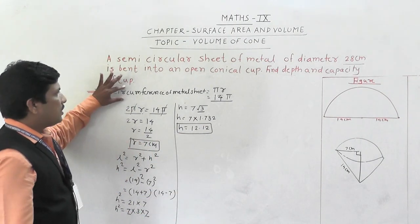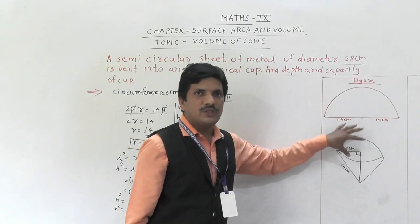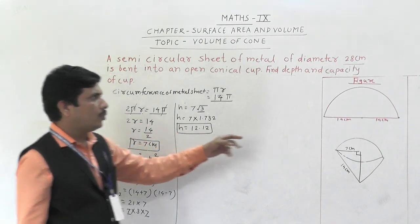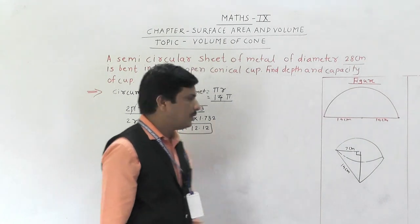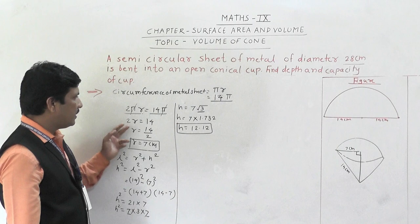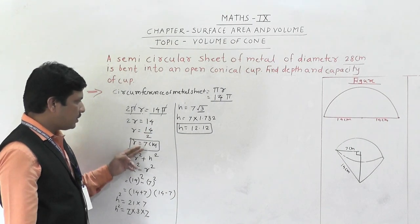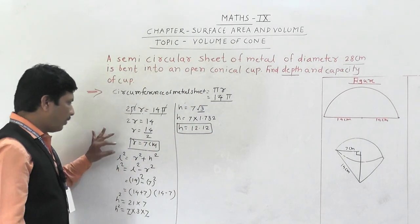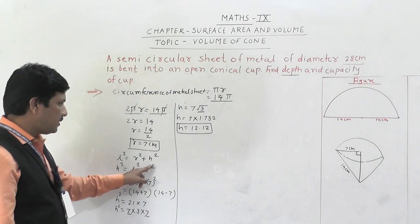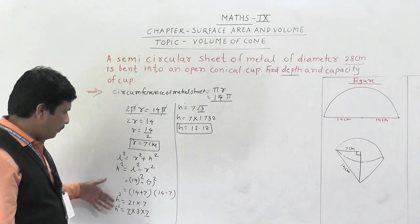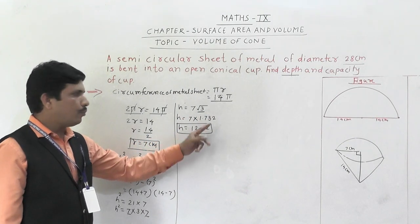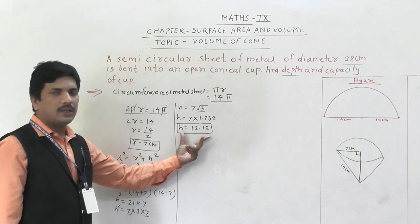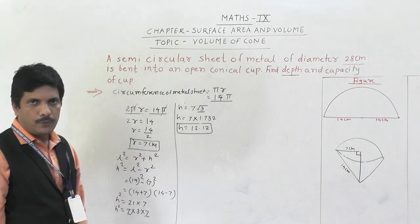To summarise what we've done: the circumference of the metal sheet equals the base circumference of the cone, so 2πr = 14π, giving r = 7 cm. Then using l² = r² + h², with l = 14 and r = 7, we get h = 7√3 = 12.12 cm. Now we have the depth (height). Next we find the capacity, which means volume of the cone.